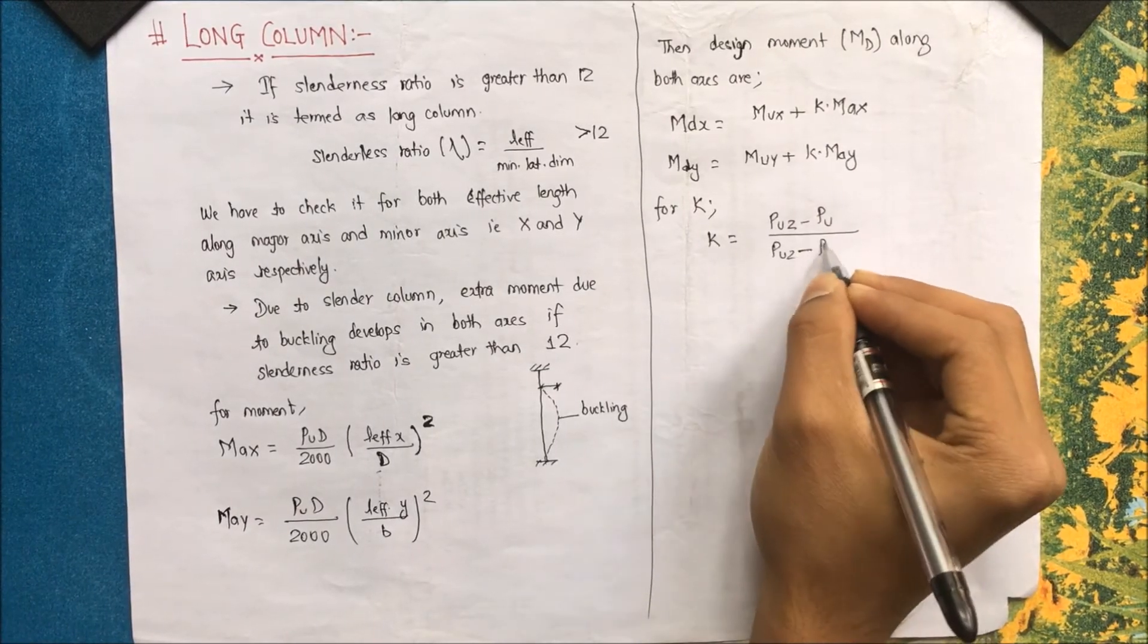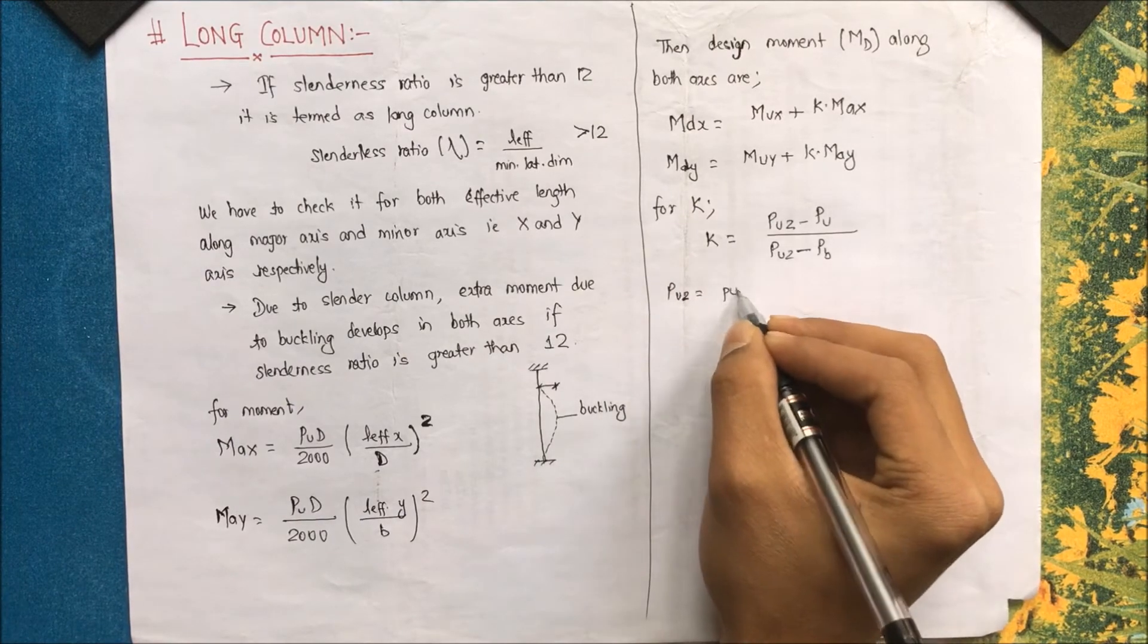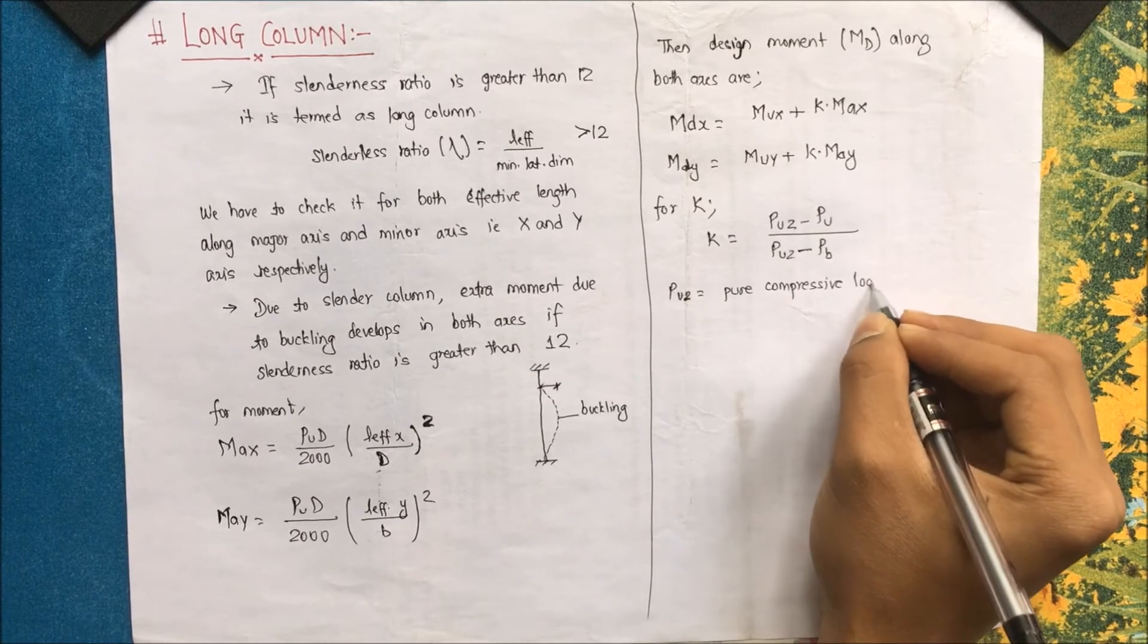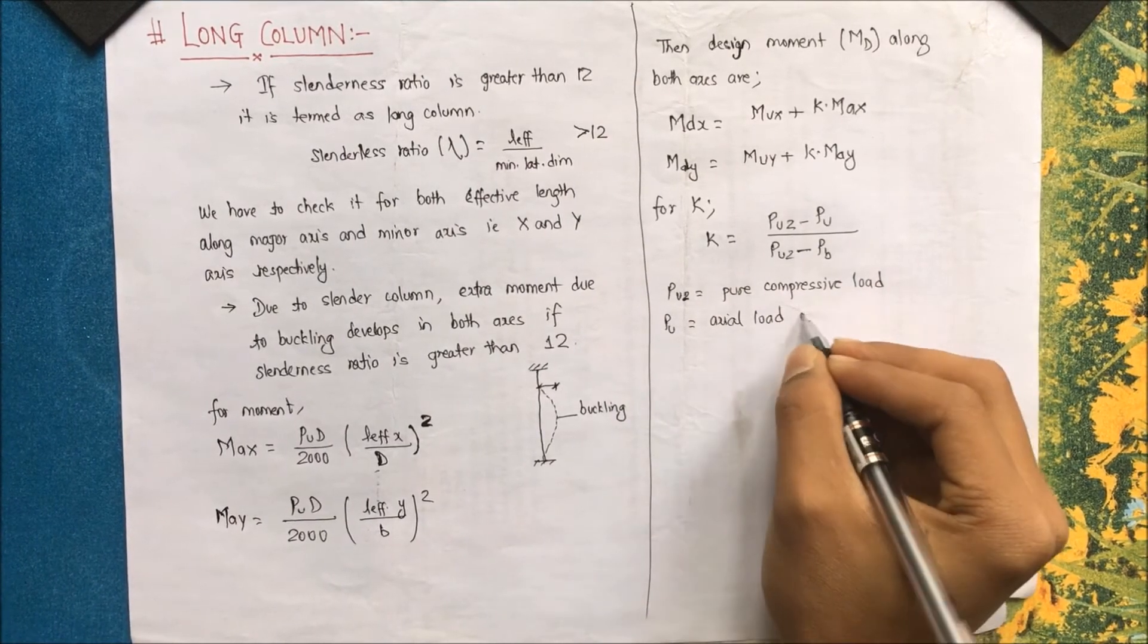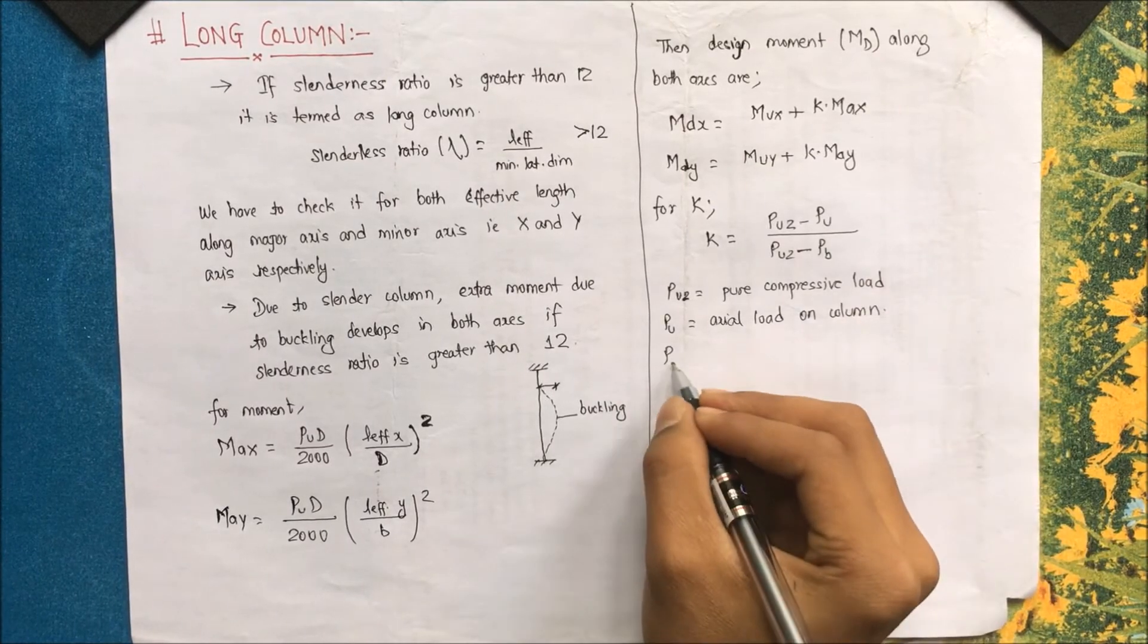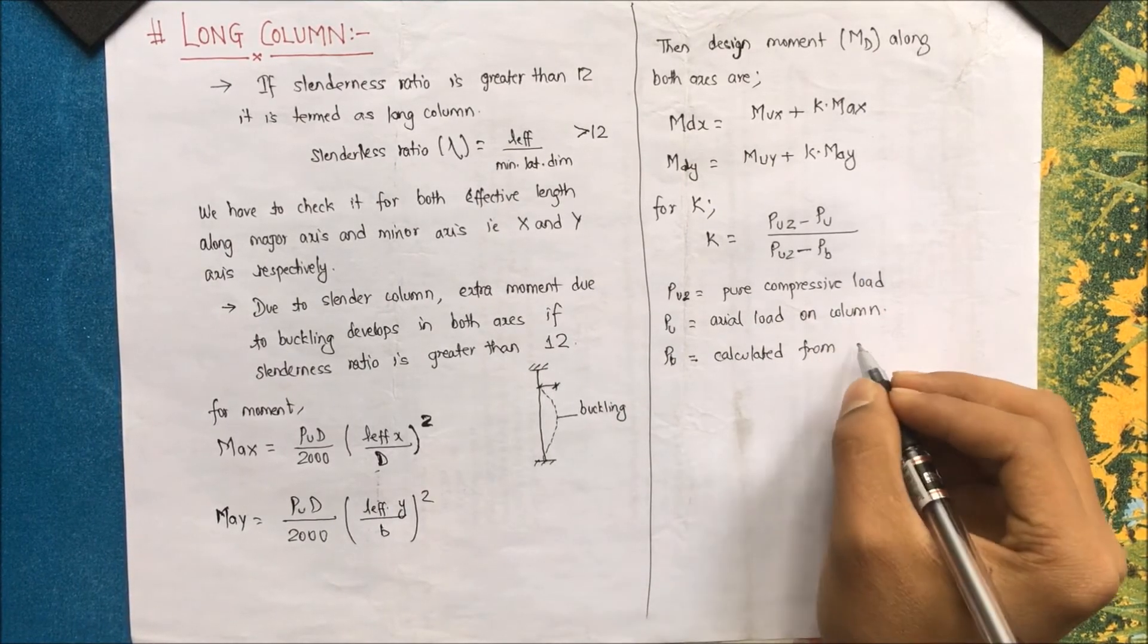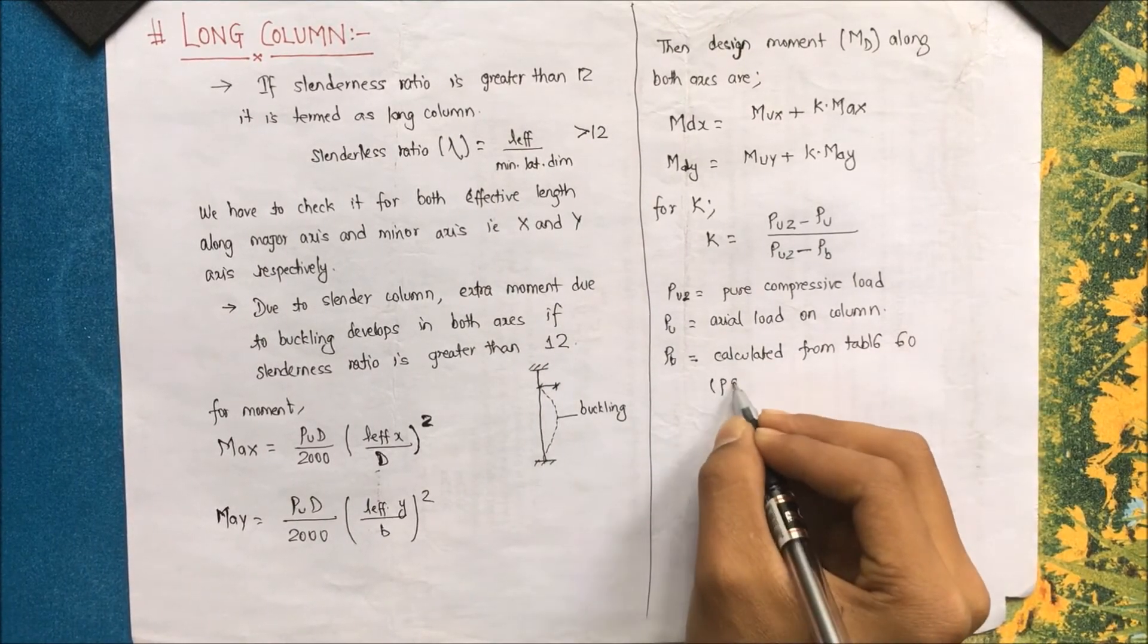Puz minus Pu by Puz minus Pb, where Puz is pure compressive load acting on the column, Pu is the axial load on column, and Pb is a load that is calculated from table 60, page number 171, SP 16.